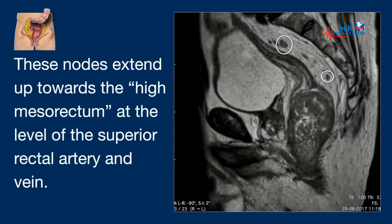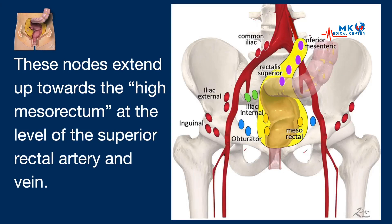These nodes extend up towards the high mesorectum at the level of the superior rectal artery and vein, which is all the way up here. This is important information for surgery or irradiation.